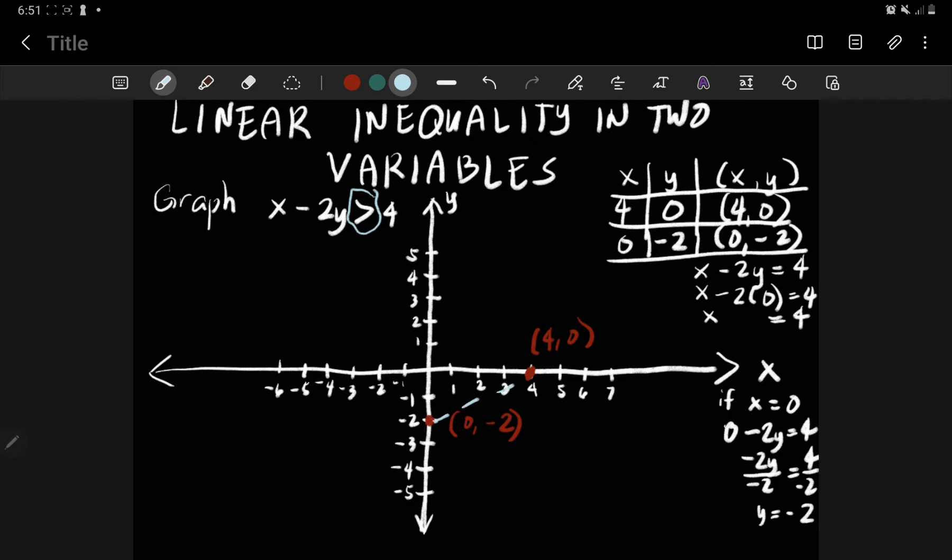Connect using dashed line. So this is the second step after finding or plotting the two points. And then next, you decide where you're going to shade. To decide where you're going to shade, you need to use test point.